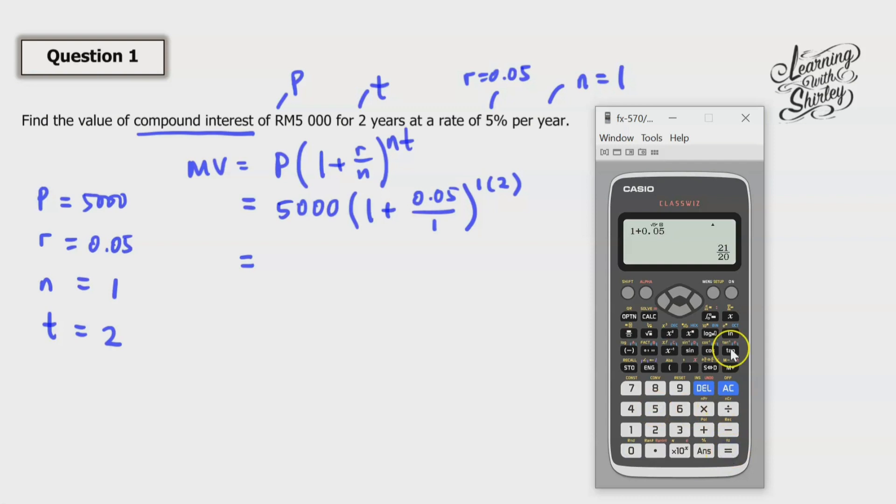Equals. And then I'm going to use this answer to the power of 2. So equals. After that, I multiply with 5000. So times 5000.